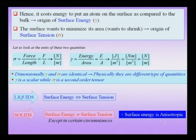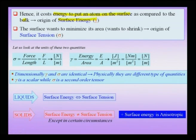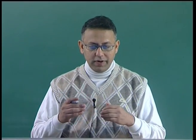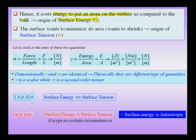This automatically implies that it costs energy to put an atom on the surface — taking a bulk atom and moving it to the surface costs energy compared to the bulk. This is the origin of surface energy, which is typically given the symbol gamma. Since atoms on the surface have higher energy, the surface wants to minimize its area — atoms want to go closer to each other or into the solid — and this tendency for minimization of area, or the tendency to shrink, is the origin of what is known as surface tension.